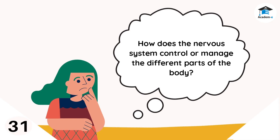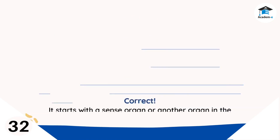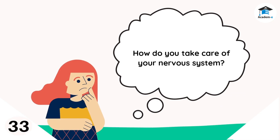How does the nervous system control or manage the different parts of the body? It starts with a sense organ or another organ sending a status message for the brain. The nerve cell surrounding the organ receives this message and sends it to a nearby nerve cell until the message reaches the spinal cord. The spinal cord sends the message to the brain, which interprets the message in a specific brain part and then sends another message on what the body will do. The spinal cord then sends this message to the nerve cells surrounding the organ that will perform the brain's instruction.